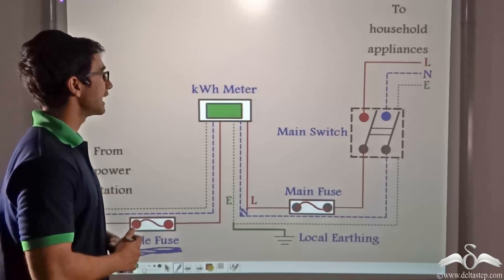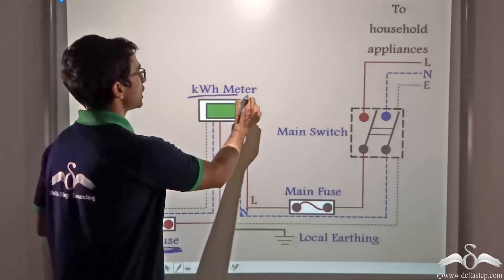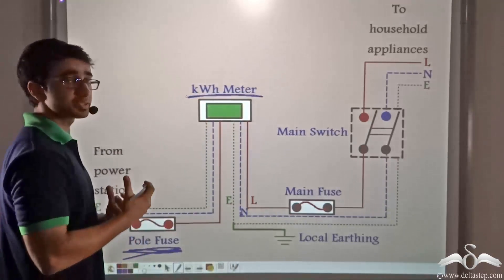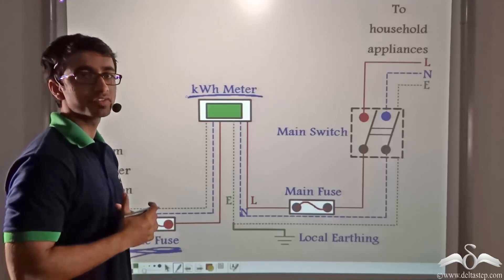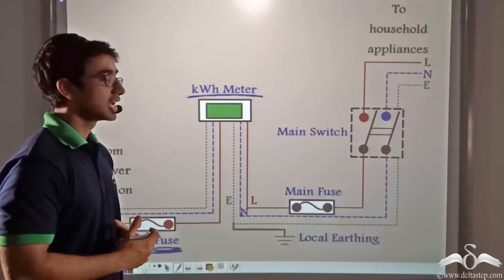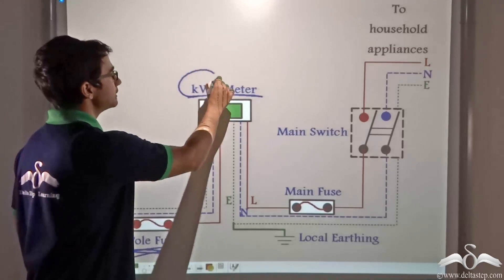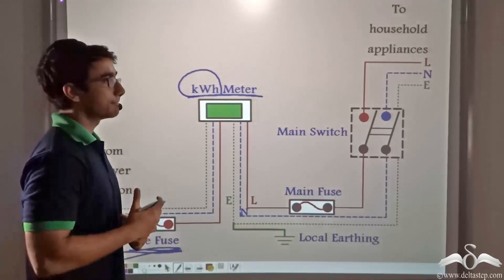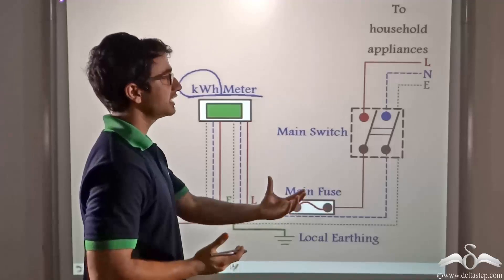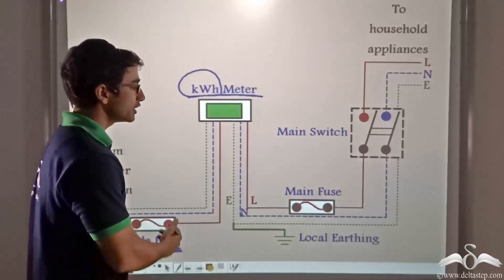Moving on, we have what is called a kilowatt-hour meter. This meter is actually used to give us the reading of the current. In other words, how much electricity or how much energy has been consumed by the appliances using electricity in the house.